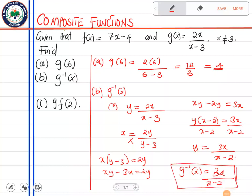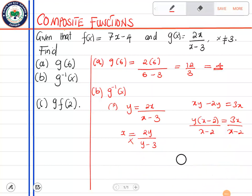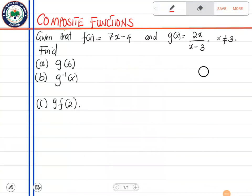Next is g of f of 2. Now g of f is a composite type of function which allows you to first find g of f of x, then later on find g of f of 2 altogether. So let's first find g of f of x. Now g of f of x means in the function of g, where there's x there you put the function of f. So in the function of g where there's x we put f.